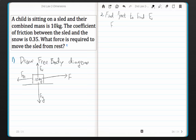So here we have Fy net is equal to, we have normal force going up, so that's going to be positive minus the force of gravity going down.